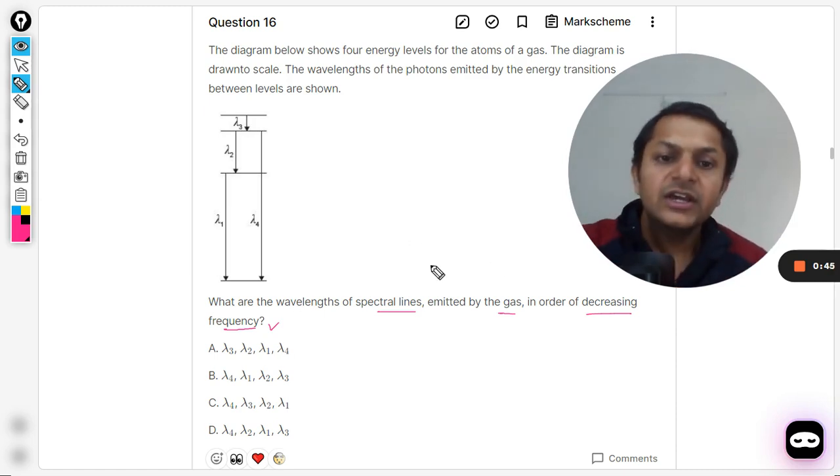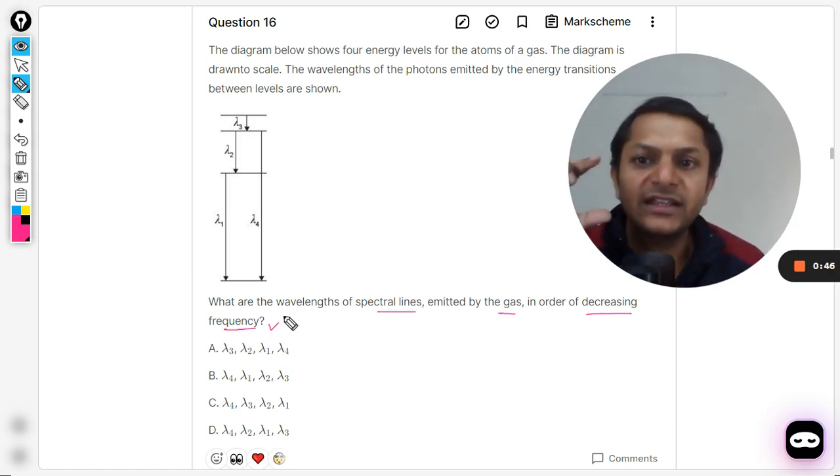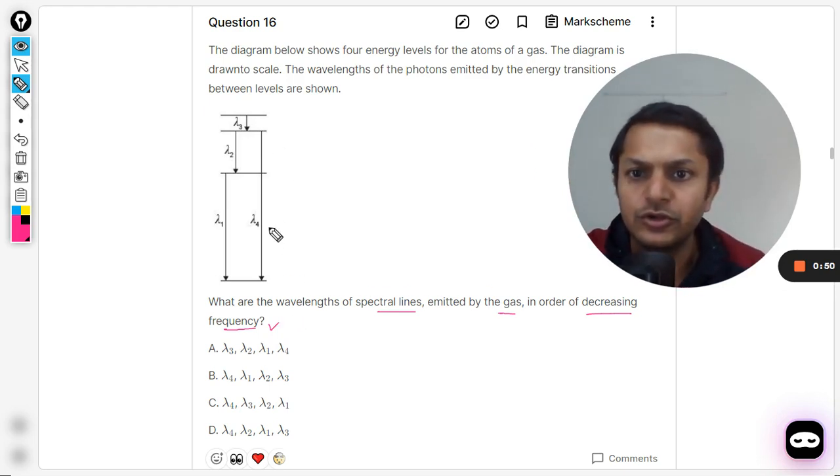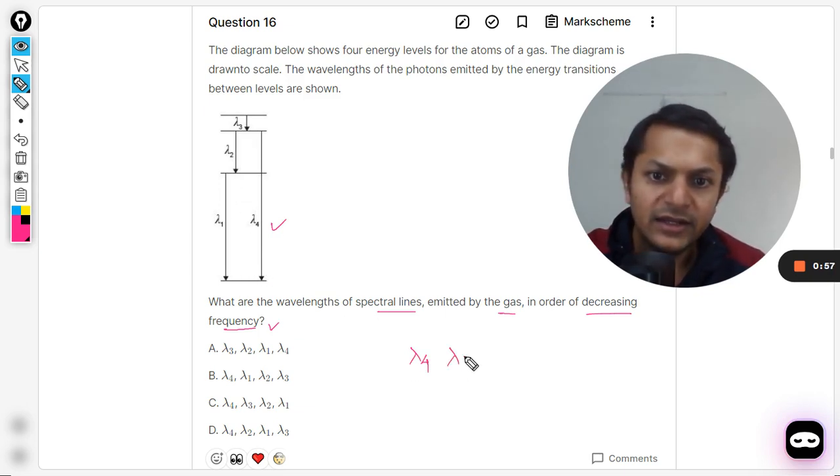So what is the biggest energy gap you see here? Lambda 4. So lambda 4 is biggest, and then lambda 1 clearly, and then lambda 2, and then lambda 3.